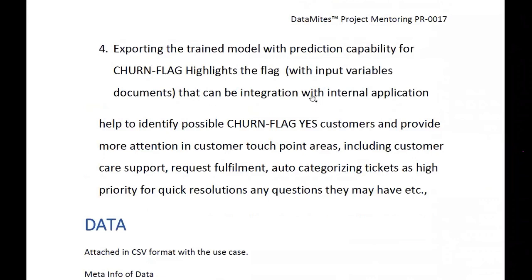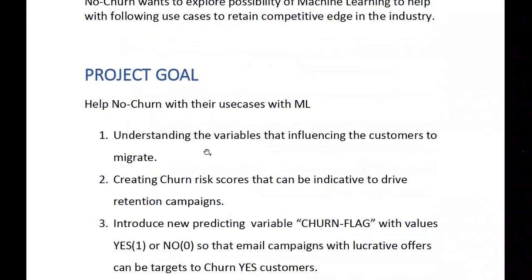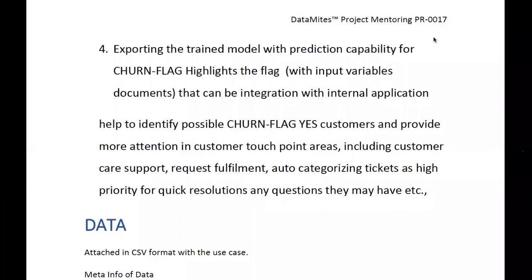To recap the four objectives: first, understanding the influential variables — which variables are actually driving churn; second, churn score — quantifying which variables have more churn score to drive retention campaigns; third, predicting the new churn flag — which is the core of the entire project; and fourth, exporting the model with documentation so the software engineering team can integrate it with dashboards and customer care applications to give more attention to people who might migrate to competitors.